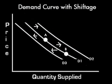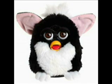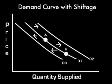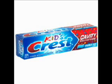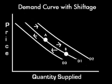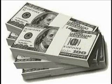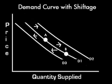These determinants will cause shifts in the graph. A shift from D1 to D2, which is an increase, could be caused by any of the demand determinants including a change in consumer tastes. For example, if Furby suddenly came back in style, the curve would shift to the right to an increased consumer demand for them. The curve would move from D1 to D3 if any of the other demand determinants changed. For instance, if Oral-B started producing the same whitening toothpaste that Crest had been for years, the demand for Crest products would most likely shift to the left and therefore decrease because of the substitute good determinant. If a person's average salary decreased, they would no longer desire as many luxury goods and the demand curve would shift to the left due to a change in consumer income.